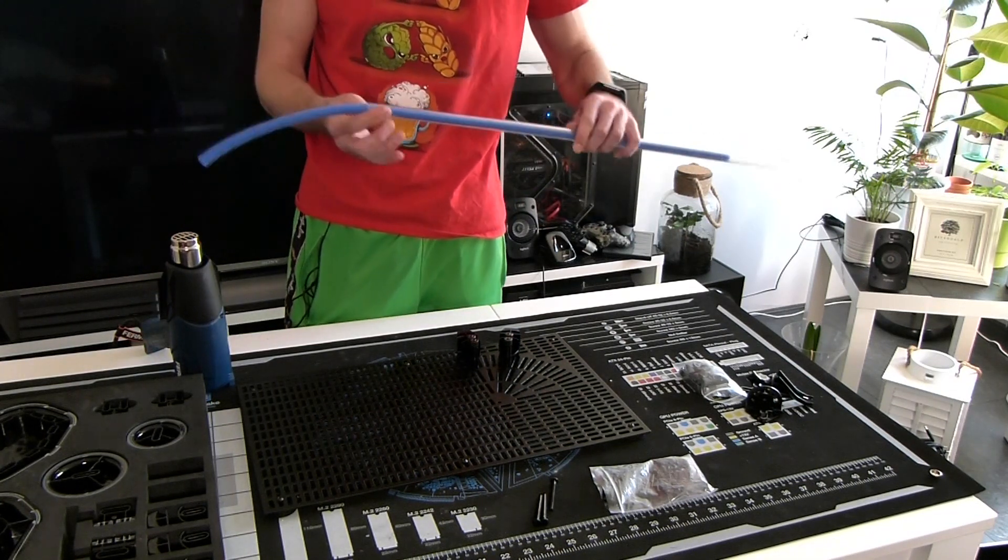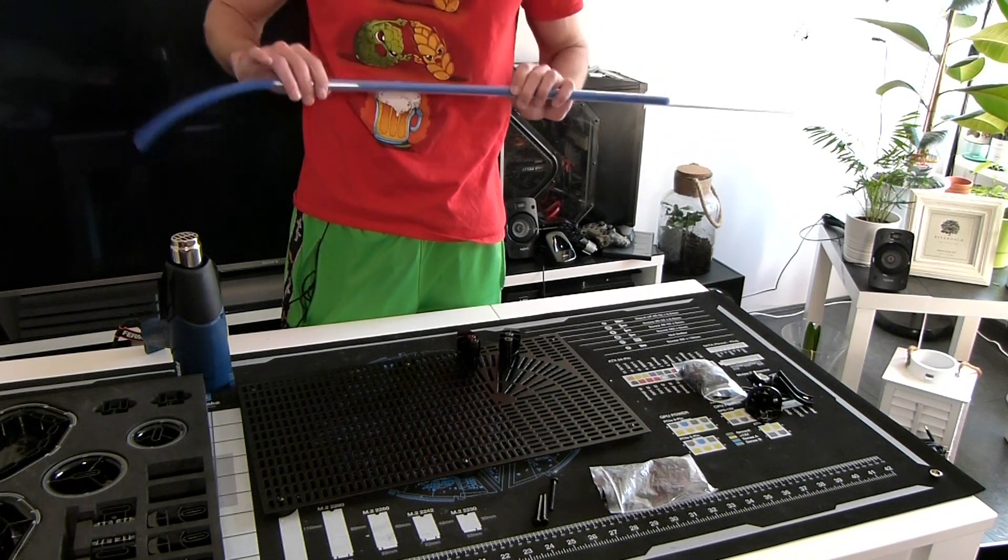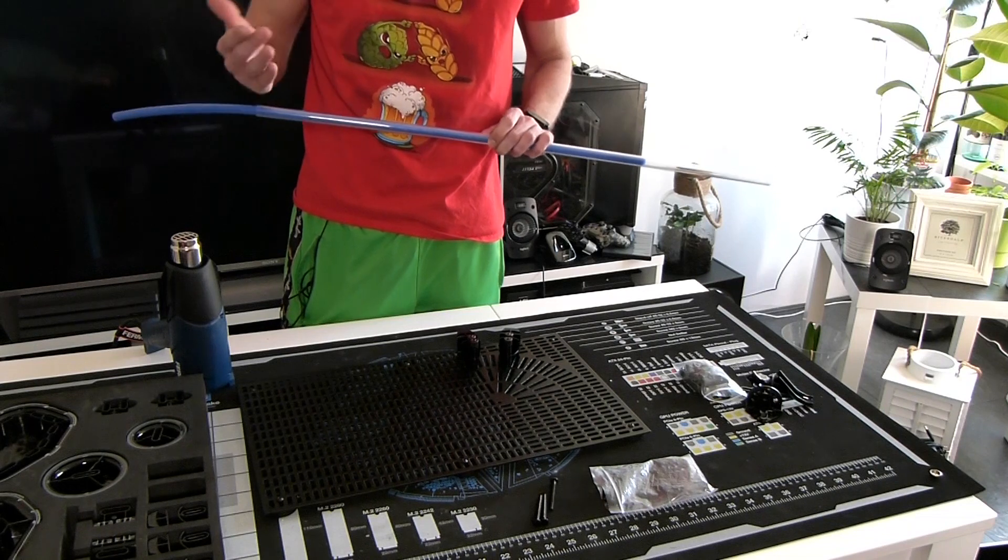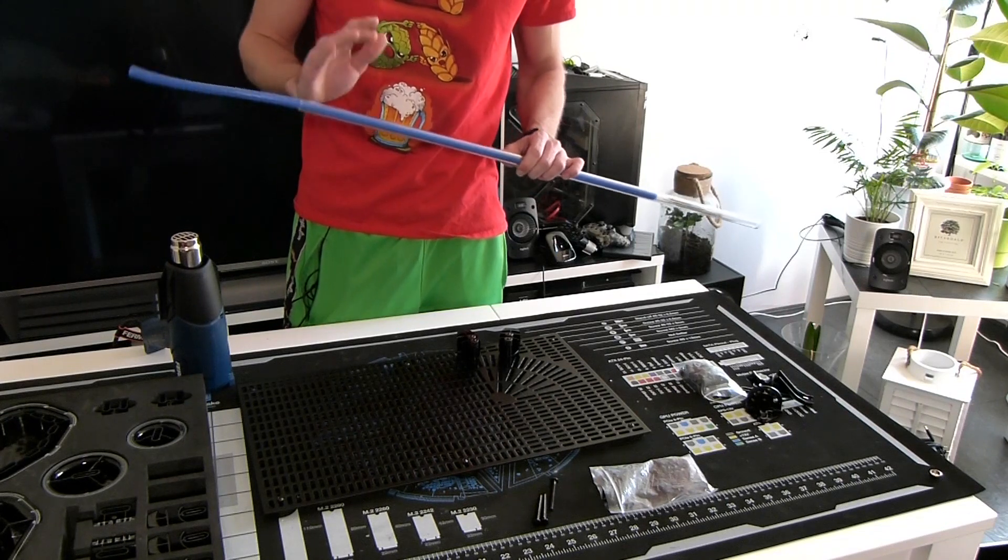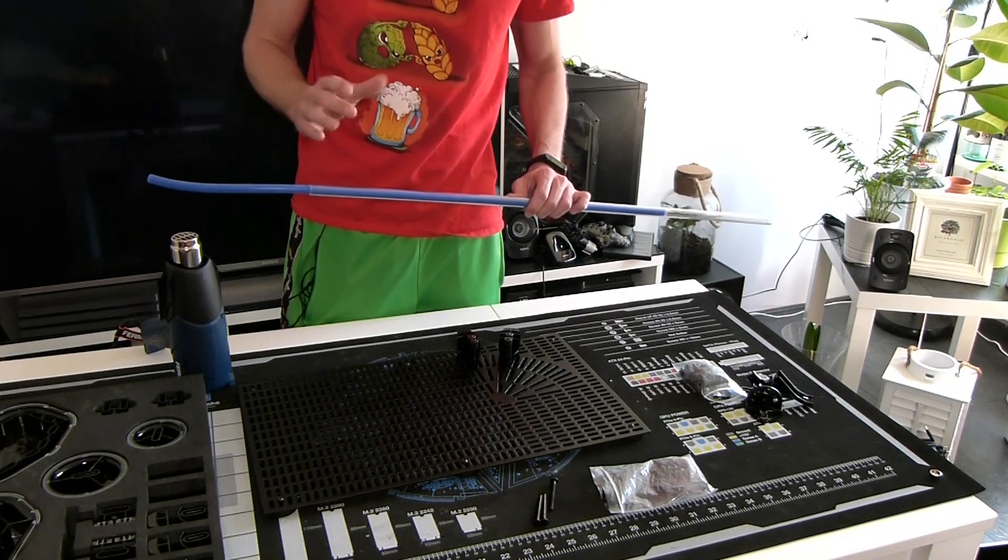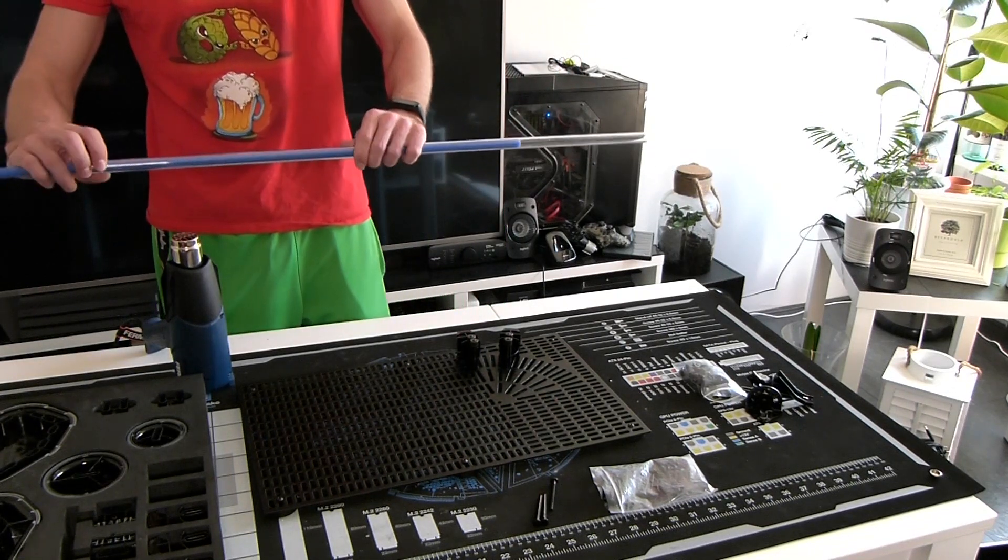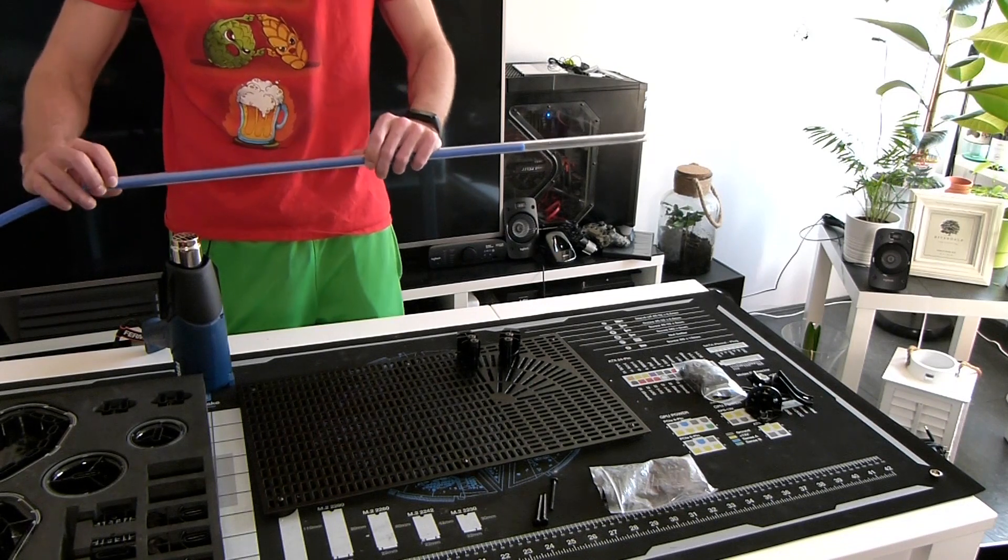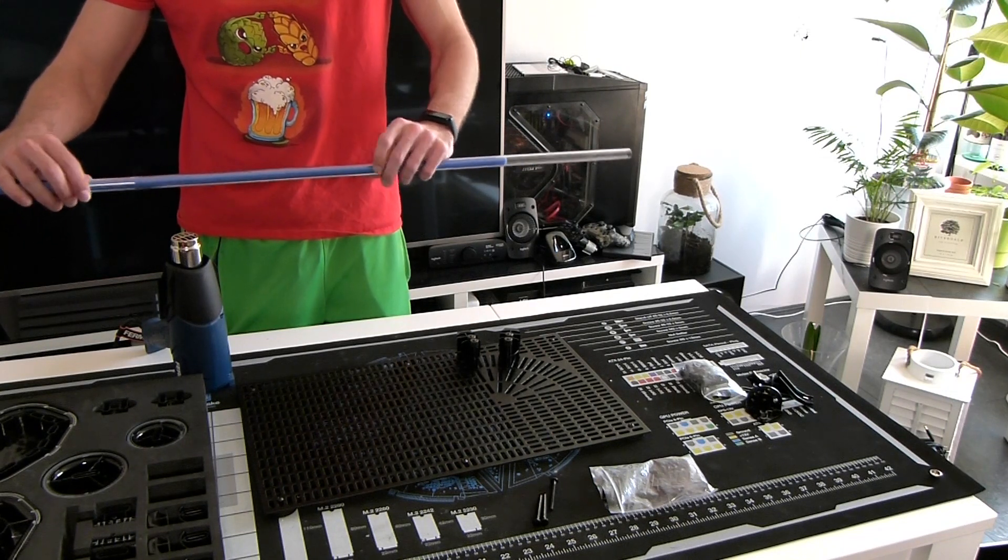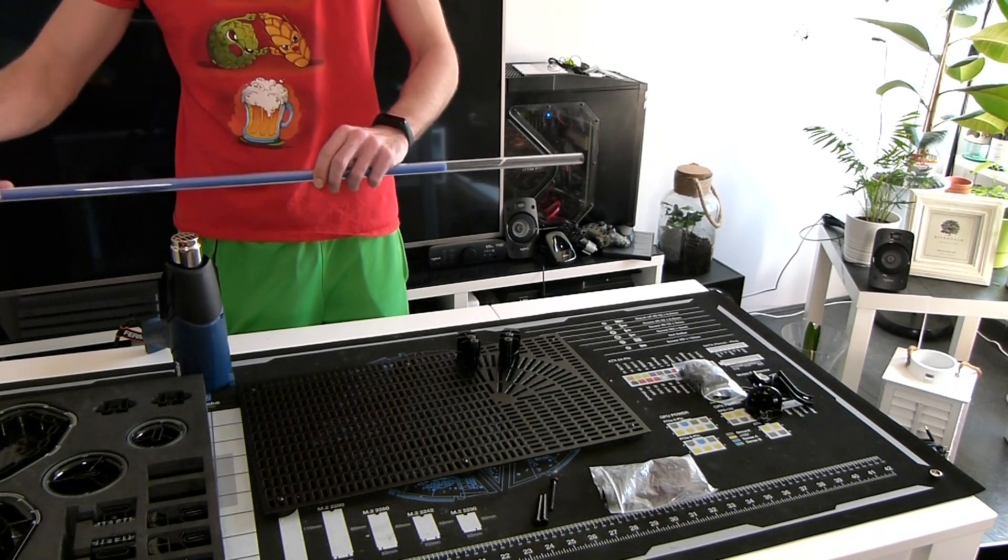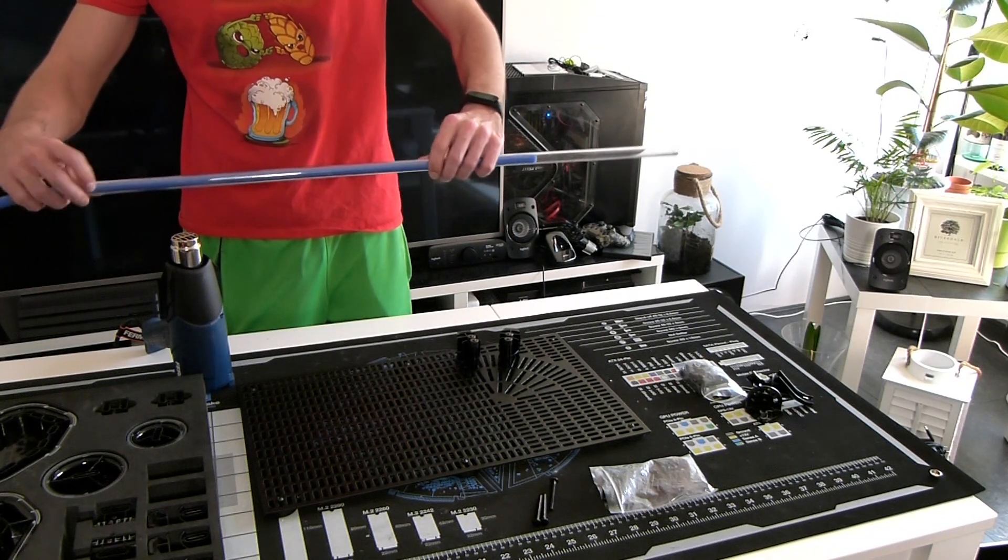So what you want to do is you want to heat it up evenly by turning it around, and to make sure that it's not heated up too far or too little. I will also show you in this video what will happen if you heat it up too much or not enough. So let's get to it. So you keep it at a good distance, then you turn it around, make sure it's heating up evenly over a wider space because you want to make a bigger bend.